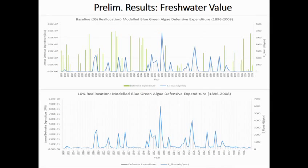Our last result is freshwater value. In the top pane, the green bars show when you would need to intervene to deliver environmental water to prevent blue-green algae, which comes at considerable cost — water is an expensive commodity. With a 10% reallocation, we can maintain the minimum flow velocity, and that removes the cost of intervening.